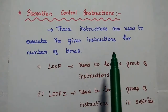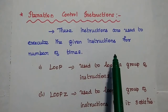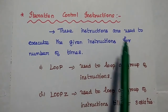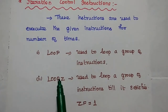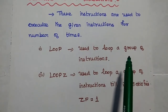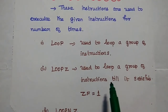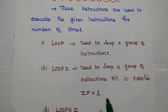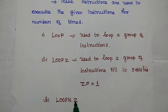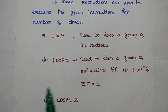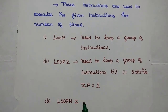The last one is Iteration Control Instructions. These instructions are used to execute given instructions for a number of times — the given set of instructions can be repeated for a given number of times. LOOP — used to loop a group of instructions. LOOPZ — used to loop a group of instructions until zero flag equals 1. LOOPNZ — used to loop a group of instructions until zero flag equals 0.